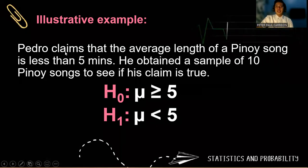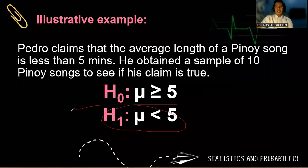If Pedro claims that the Pinoy song has less than 5 minutes, therefore your alternative hypothesis will be μ < 5, while the null hypothesis is μ ≥ 5. Exactly the opposite.